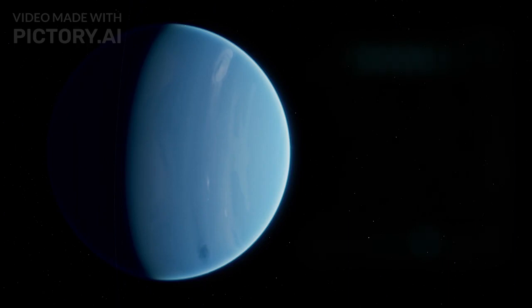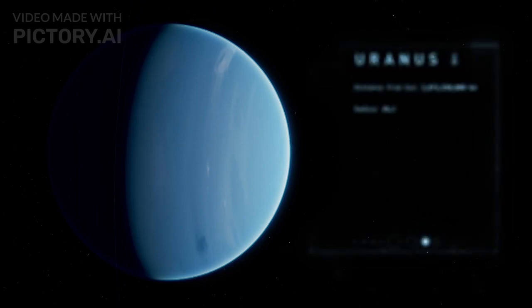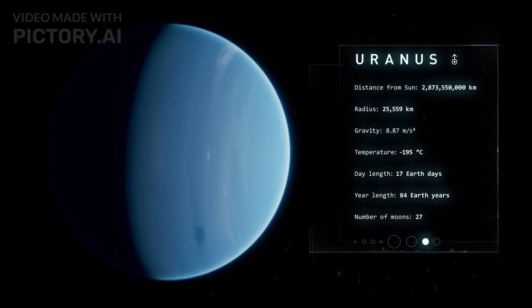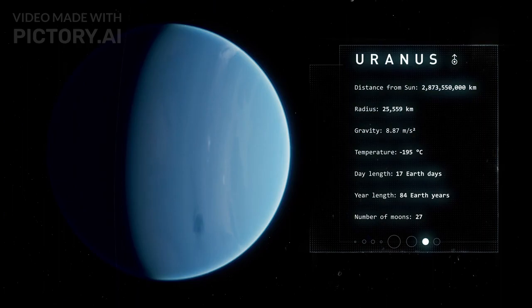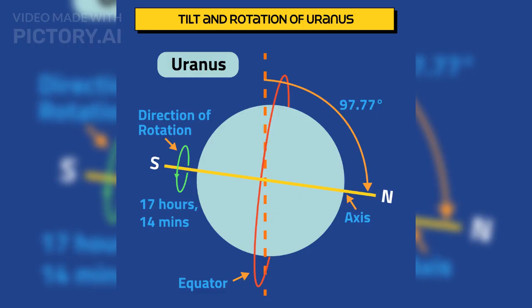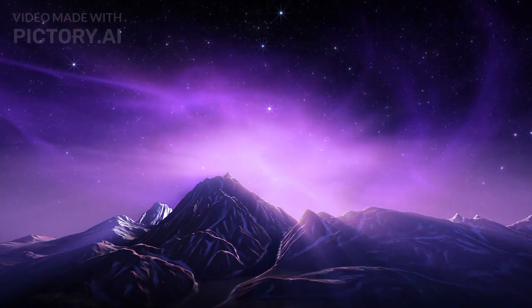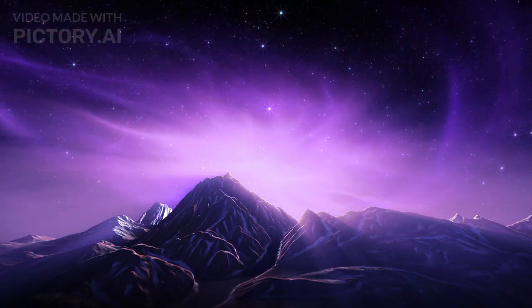On the other side, a day on Uranus lasts only 17 hours, but its seasons last 21 Earth years. Uranus is the rebel of the solar system as it orbits the Sun. This quirky tilt results in some of the most bizarre seasons in the cosmos.